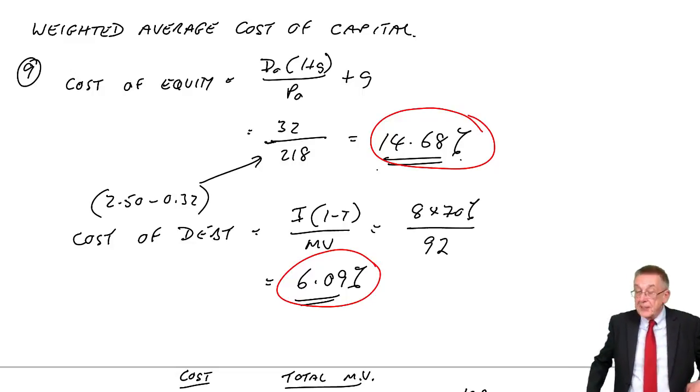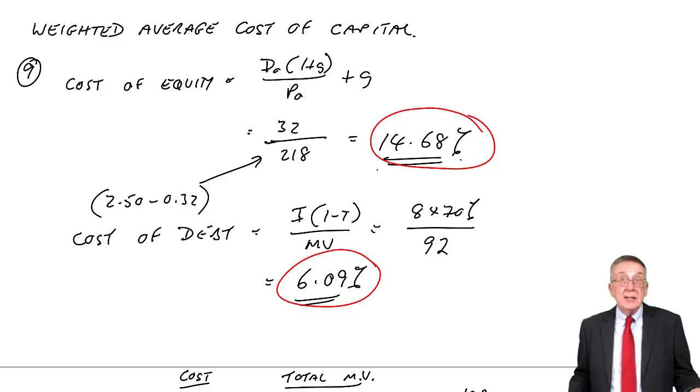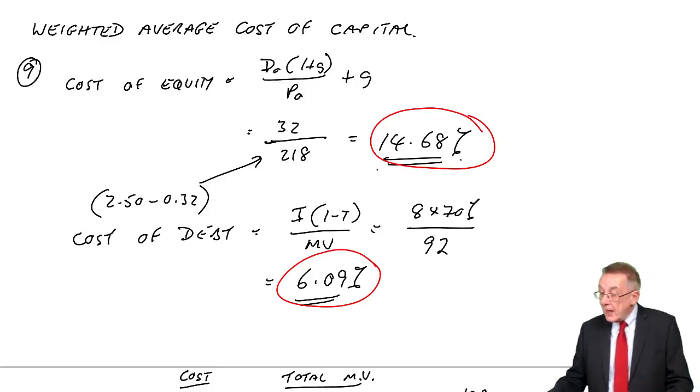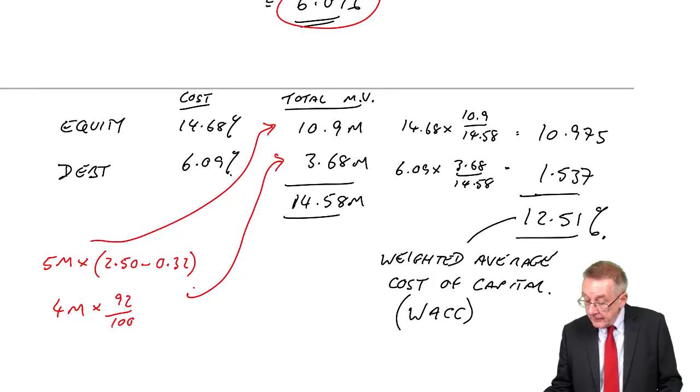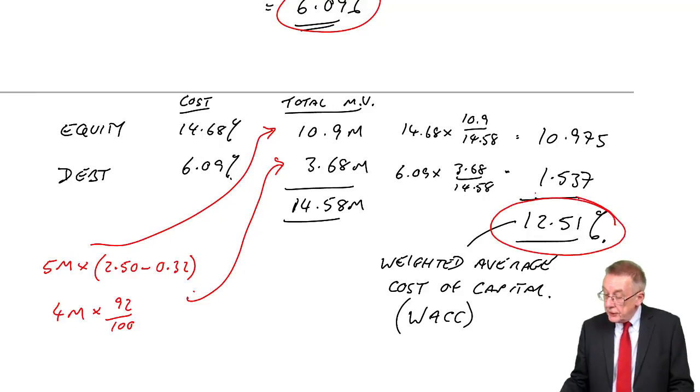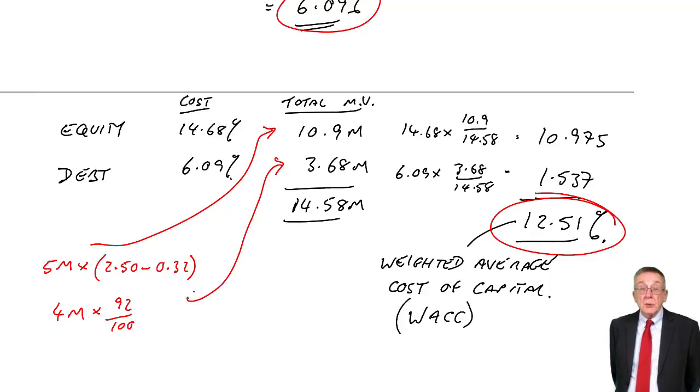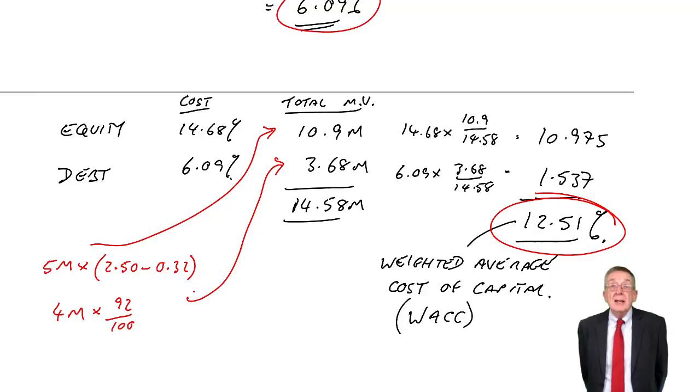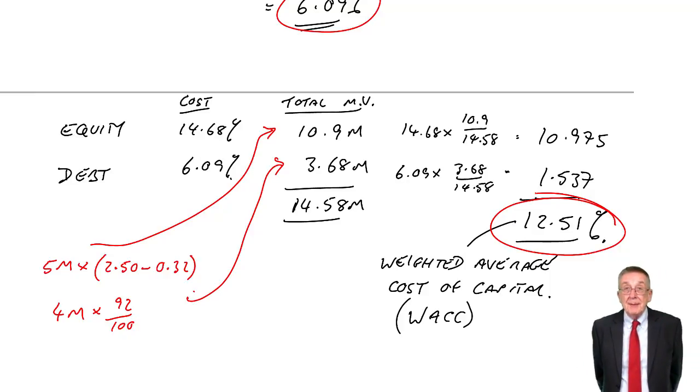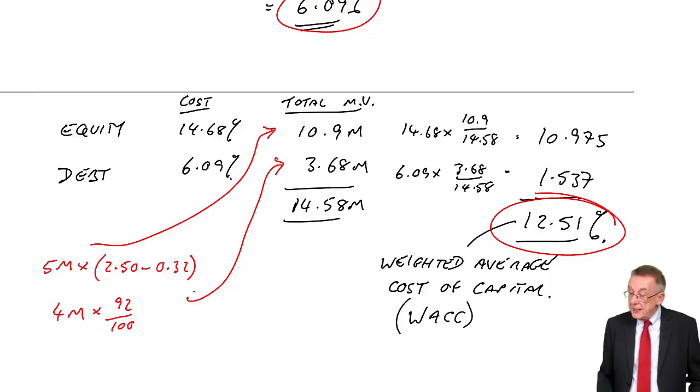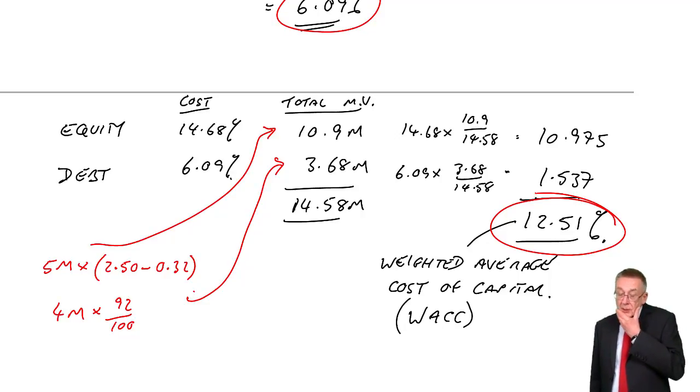And I said at the time, we're not surprised the cost of debt is lower, we'd expect it to be lower. And we then arithmetically took a weighted average, weighted by the total market values and got 12.51. And I said that that's usually the rate we'd use for investment appraisal. Although in the exam, it was the nearest percent.